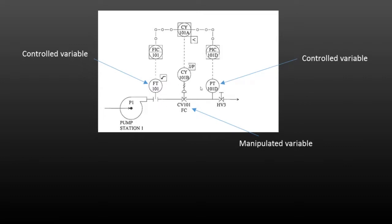But it is more involved than that. Lots of times we can have selective control that will select from a couple of different conditions that may occur as a process is operating in order to try to avoid any unfortunate incidents. Selective control will use one measuring device for normal situations.